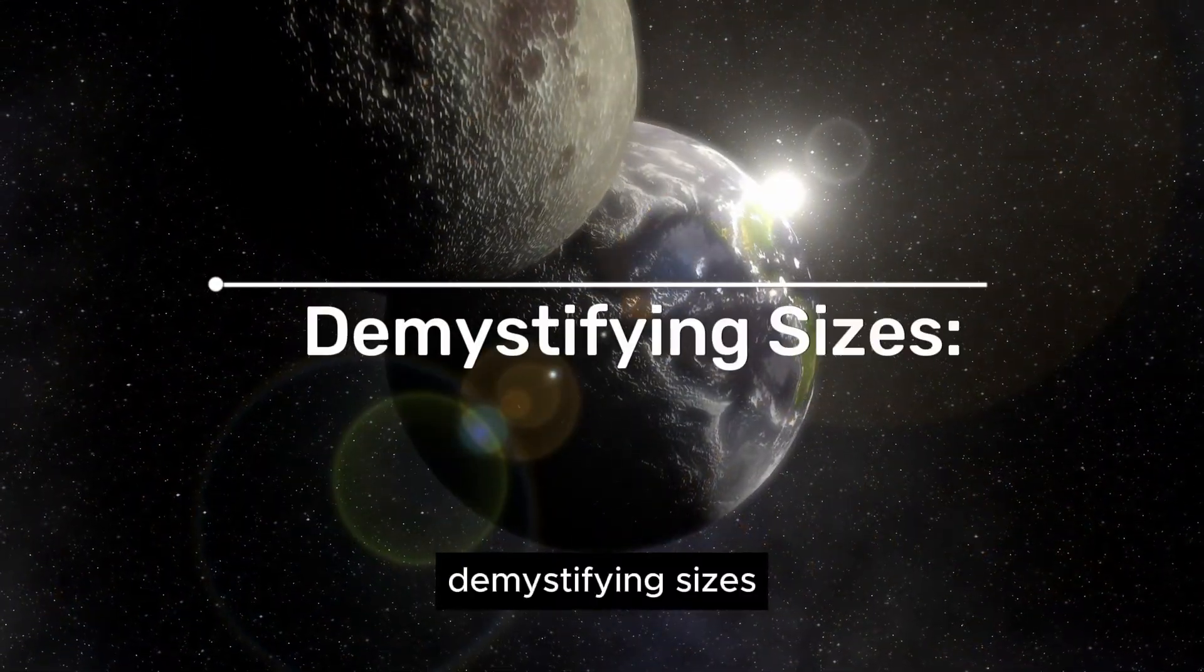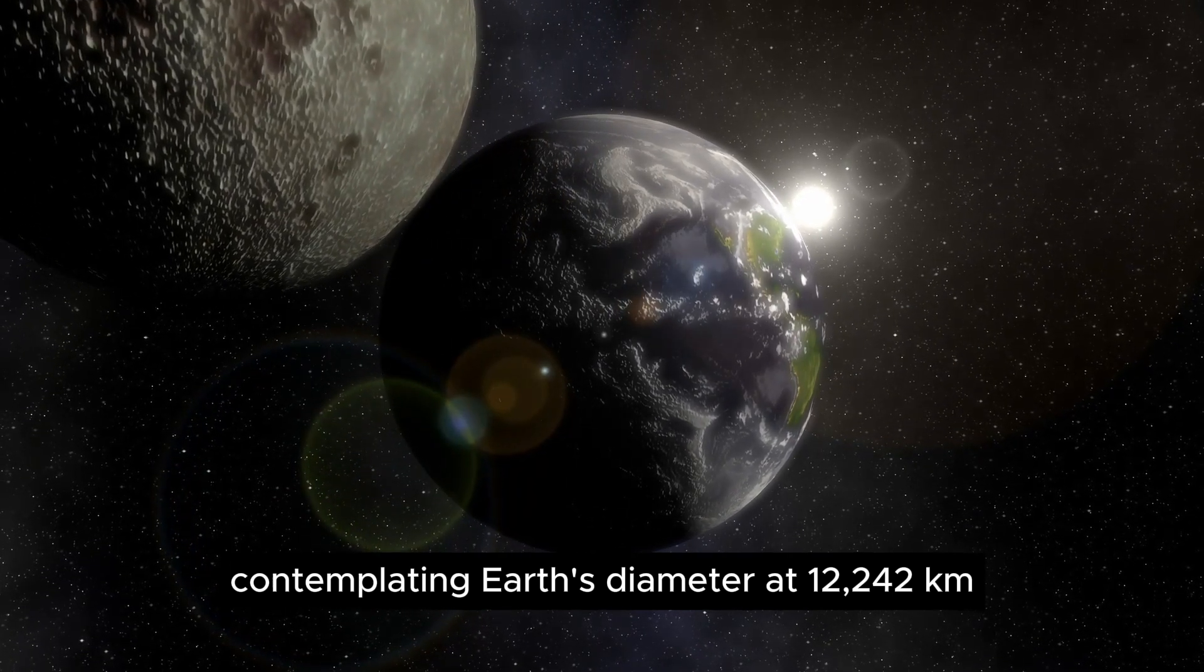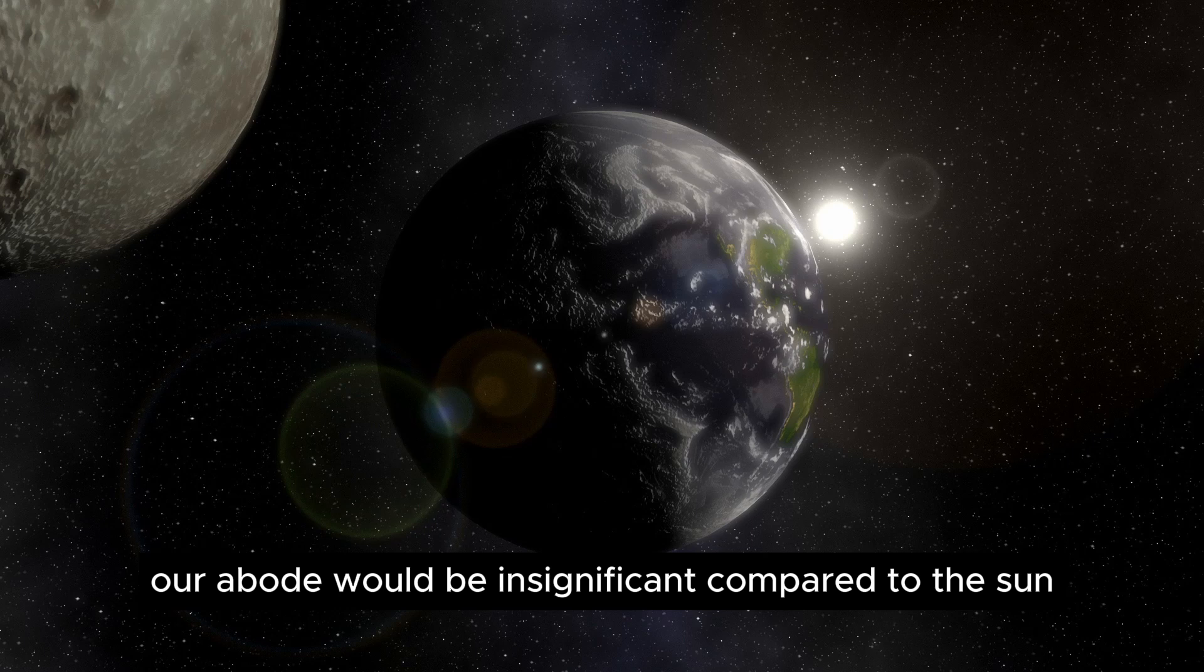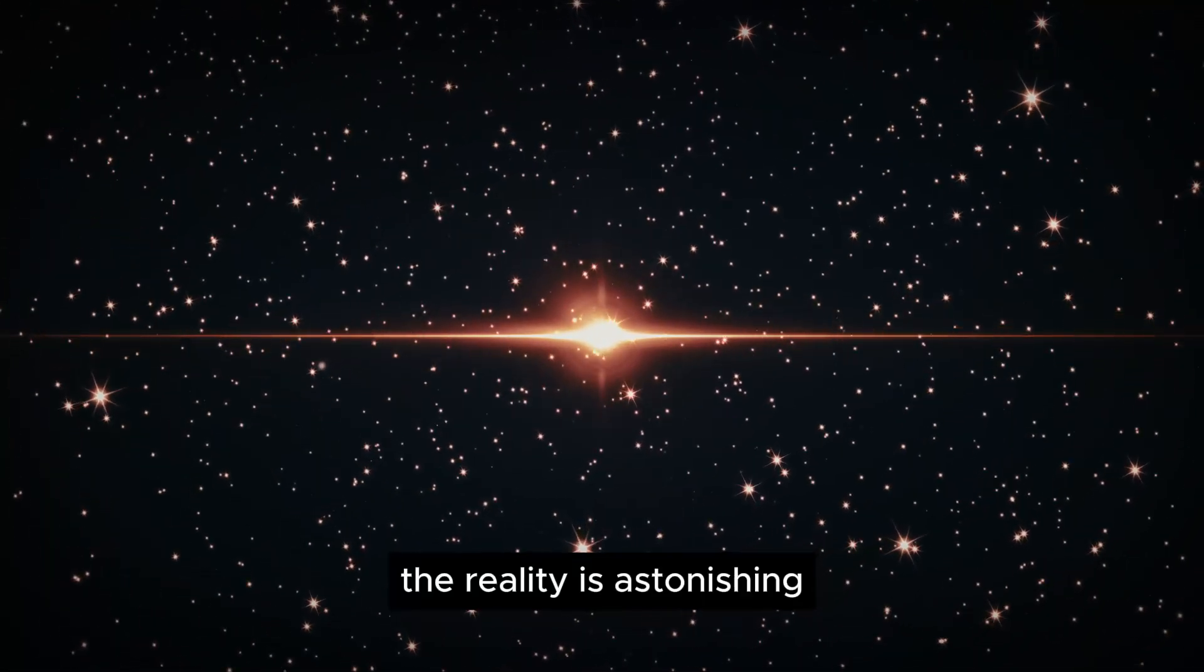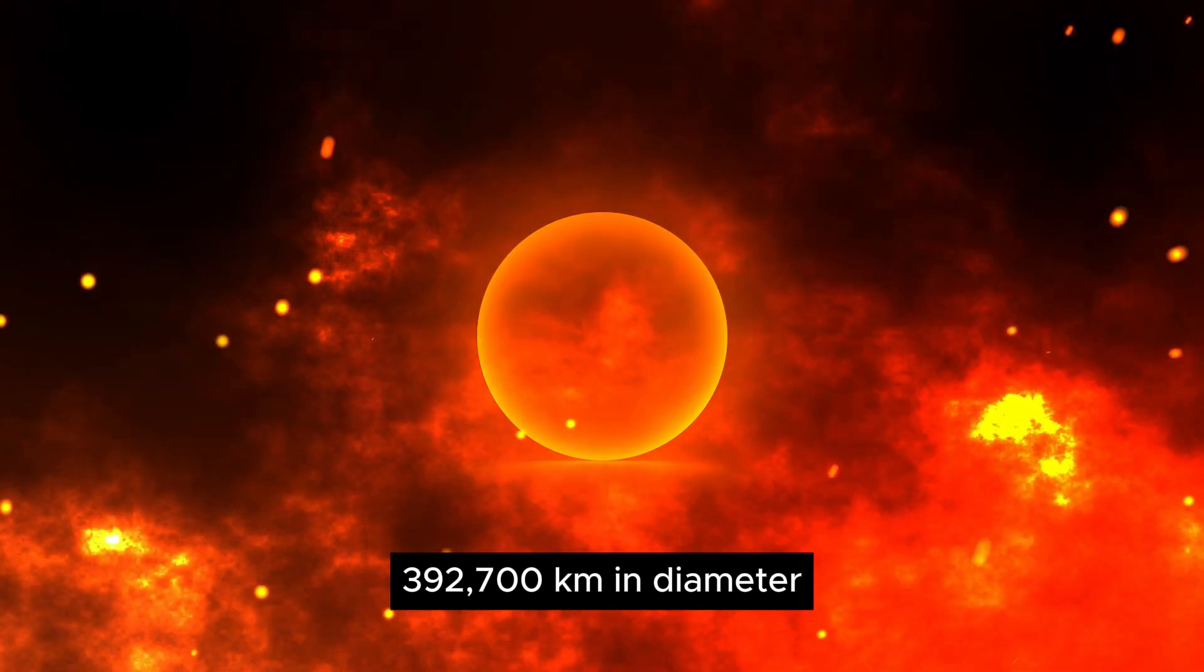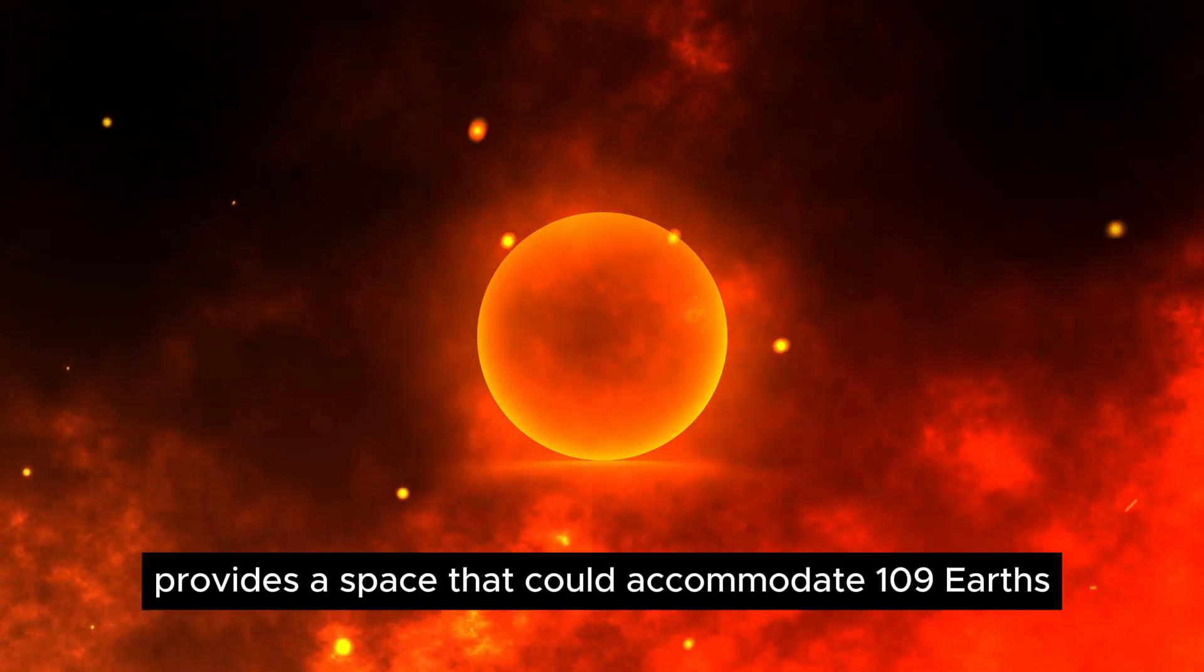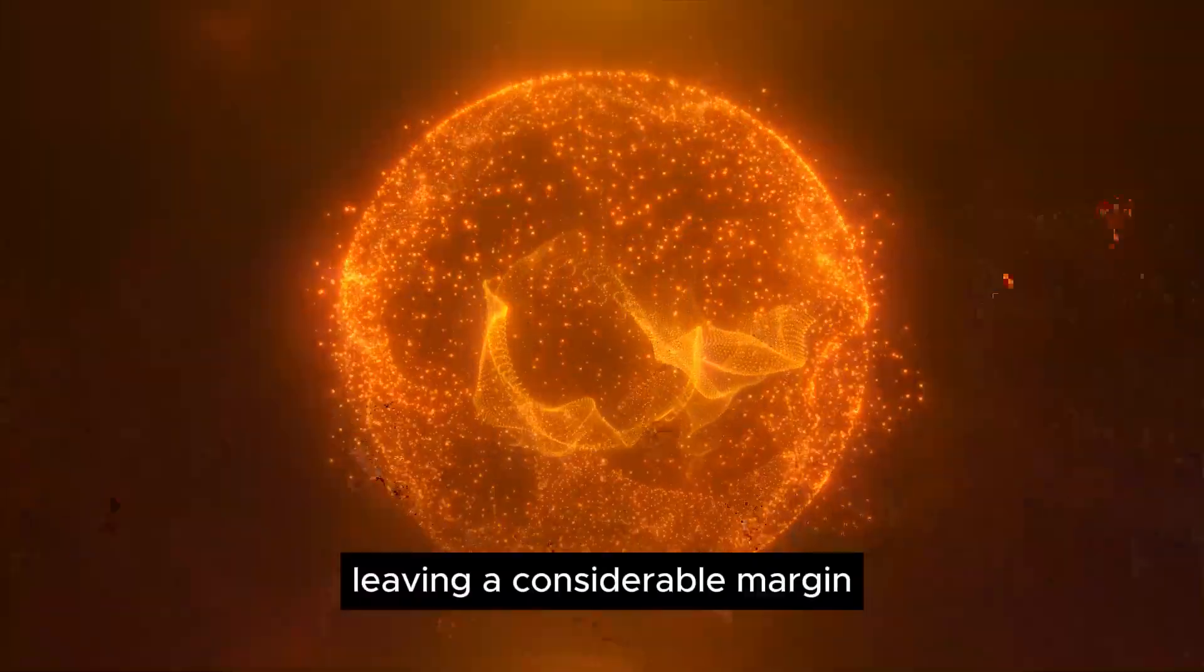Demystifying sizes: contemplating Earth's diameter at 12,142 kilometers might lead one to think our abode would be insignificant compared to the sun. The reality is astonishing. The sun, with its imposing 1,392,700 kilometers in diameter, provides a space that could accommodate 109 Earths, leaving a considerable margin.